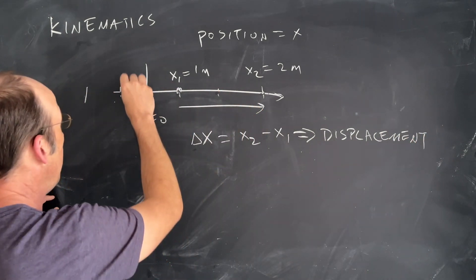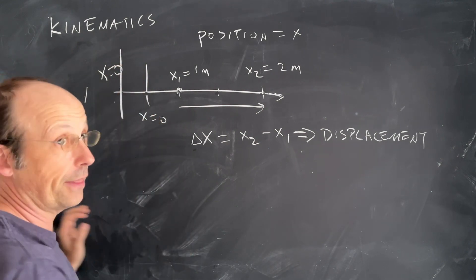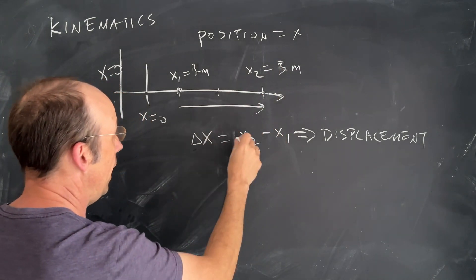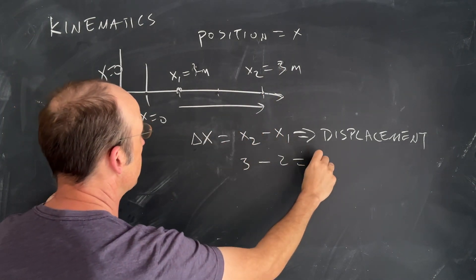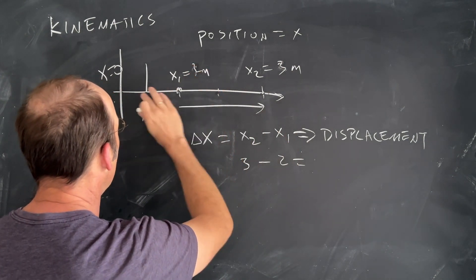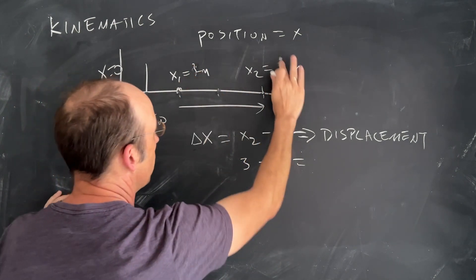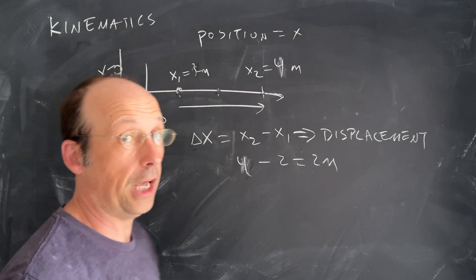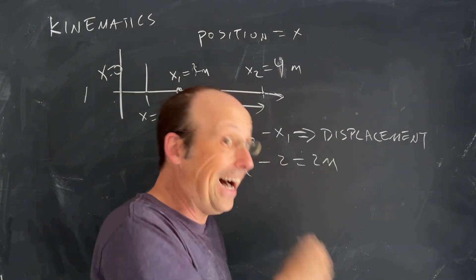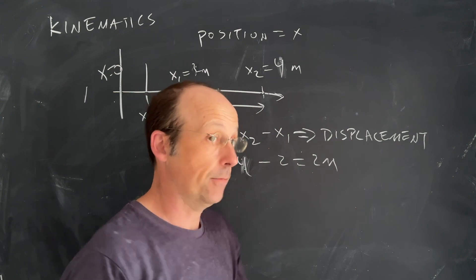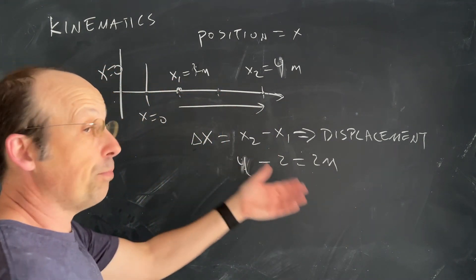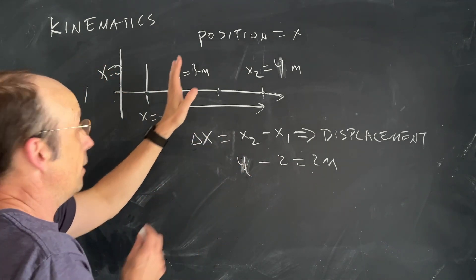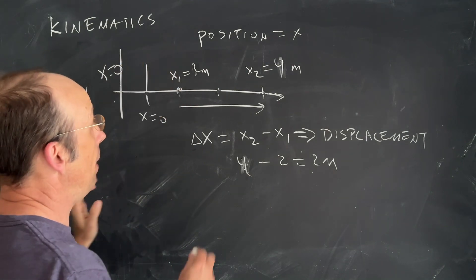Notice what would happen if I put my origin right here — x0 is there. Well, now x1 would be two, and that would be three. But either way, I get four minus two equals two meters, which is my displacement — the same as before. The displacement does not depend on the location of your origin. The displacement can be positive or negative, even with positive x values.